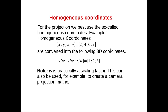Homogeneous coordinates are useful for this. Homogeneous coordinates means we have an additional helper variable w. You have coordinates x, y, and z, and additionally this helper variable w. Here I have some example numbers that are converted into 3D coordinates by dividing by w. We normalize everything to w equals 1 and then we get the 3D coordinates — so w here is essentially a scaling factor.